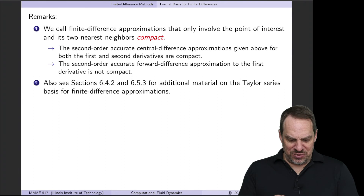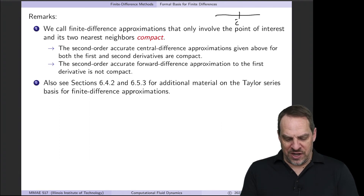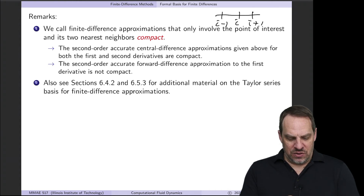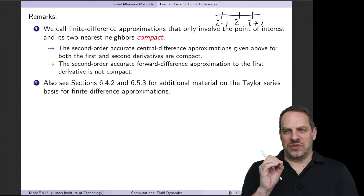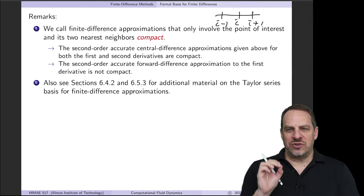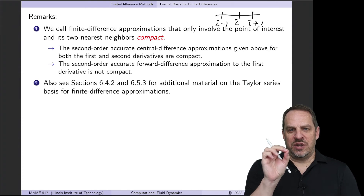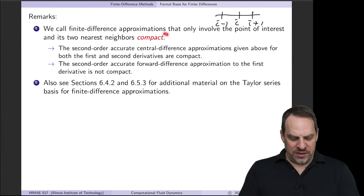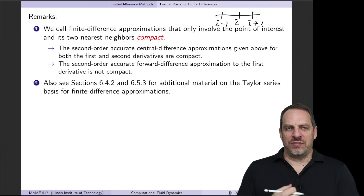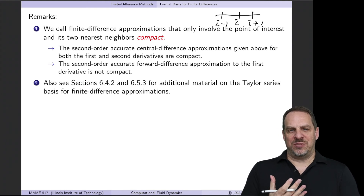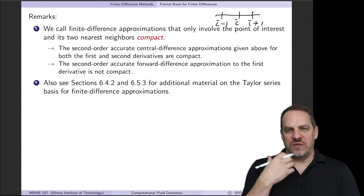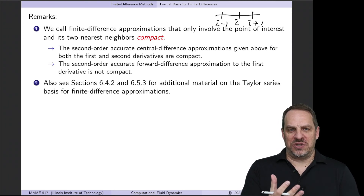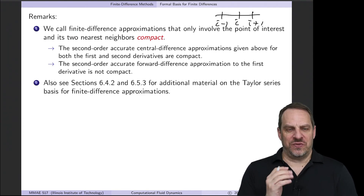When an approximation involves only the point itself and immediate neighbors to the right and left (or above and below), we call it compact. Compact finite difference approximations are desirable because they yield very nice forms of the resulting system of linear algebraic equations — specifically tridiagonal matrices — which have excellent properties and allow development of very efficient solution methods.